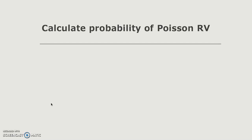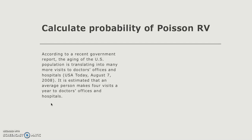To understand further on calculating a Poisson probability, let's look at the following case. According to a recent government report, the aging of the U.S. population is translating into many more visits to doctors' offices and hospitals. It is estimated that an average person makes four visits a year to doctors' offices and hospitals.